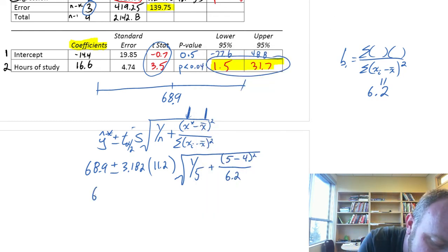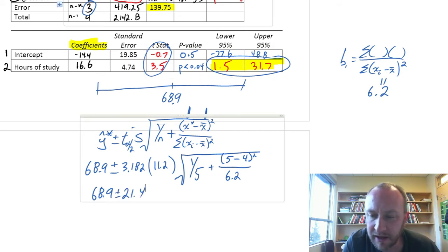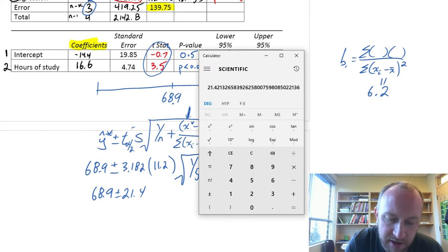So, this is 68.9, plus or minus 21.4. And now, we can find our limits.